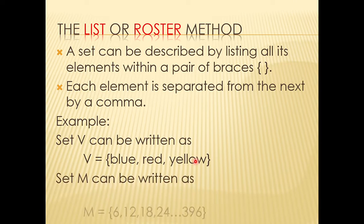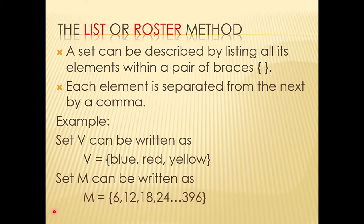Set M can be written as M equals 6, 12, 18, 24, and so on until 396. Remember that our set M is between 1 and 400, meaning 400 is not included, and neither is 1. The three dots indicating continuation are what we call ellipsis.